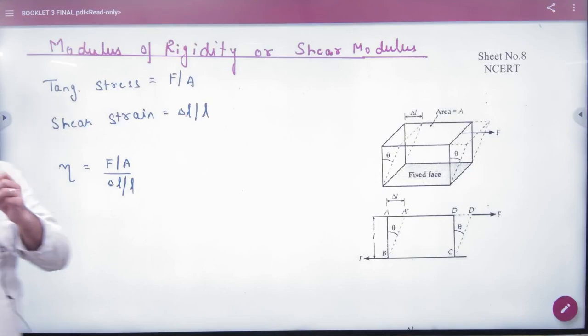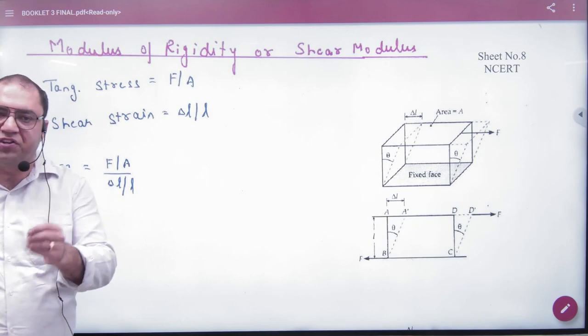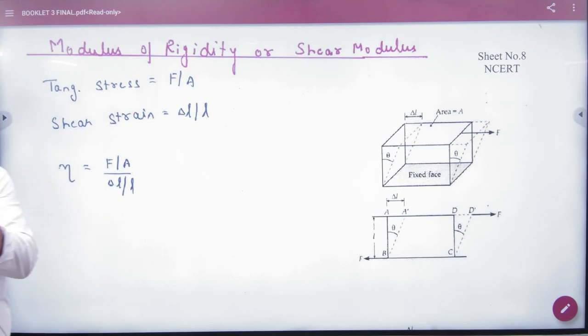In Booklet 3, which is a pending topic, the first topic is shear modulus or modulus of rigidity. We have done Young's modulus numerical, we have done bulk, but we did not do shear.